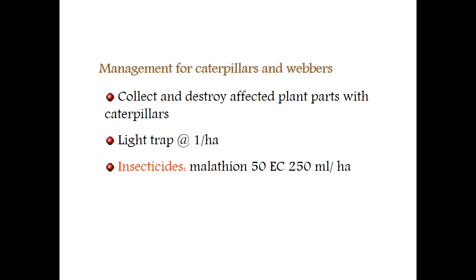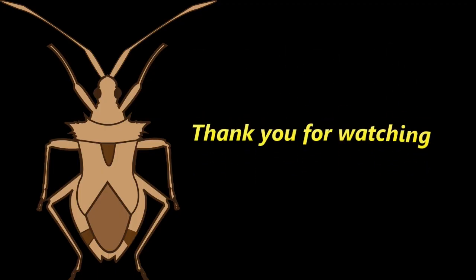Coming to management of caterpillars and webbers: collect and destroy the affected plant parts with caterpillars. Set light traps at one per acre, because being moths, light traps can attract and kill or trap the moths. This is a crop mainly for leaf production, so we have to use safe contact insecticides to control the insects. That is why we are using Malathion as the effective chemical control. Here I end my presentation. Thank you.